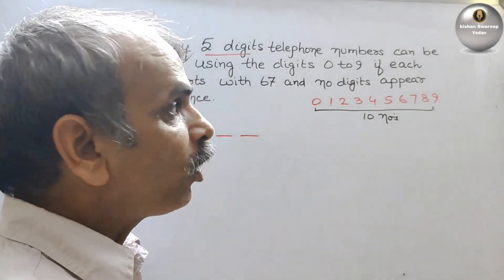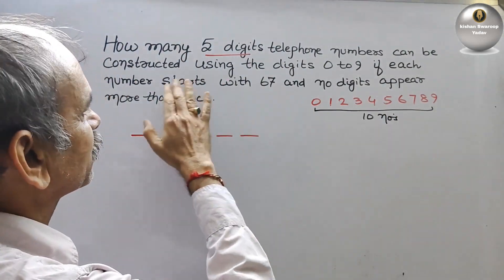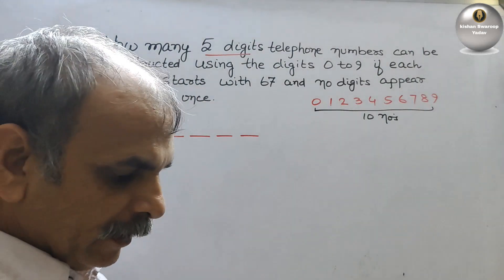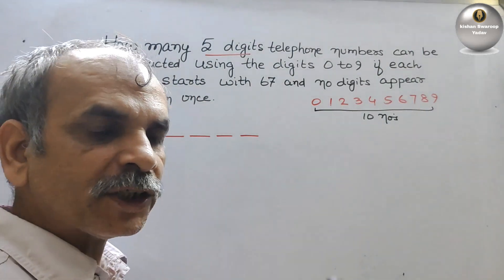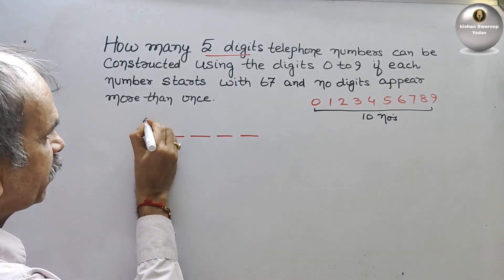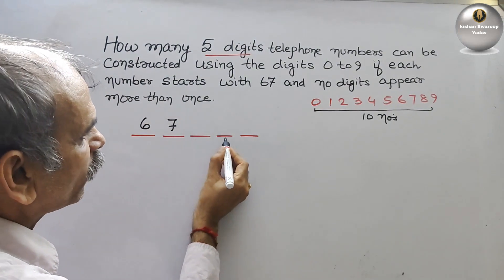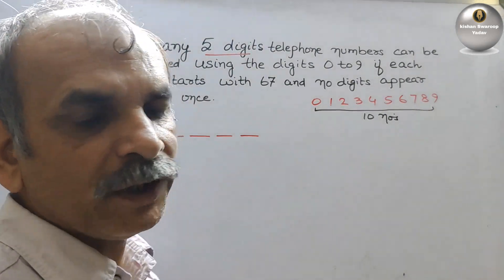In that, what they have told is that 67 is starting the numbers. That means 2 numbers are fixed. 6 is here, 7 is here. The remaining is only 3 vacancies we can say.